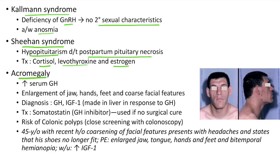Now let us see about acromegaly. In this case there is elevated serum growth hormone. Clinical features include enlargement of the jaw, hands, feet and coarse facial features as you can see in this picture. For diagnosis, there will be elevated growth hormone and insulin-like growth factor 1 (IGF-1), which is made in the liver in response to growth hormone. For treatment, surgery can be done to remove the tumor. We can give somatostatin, which is a growth hormone inhibitor, if there is no surgical cure. In cases of acromegaly there is risk of colonic polyps, so we have to screen with colonoscopy.